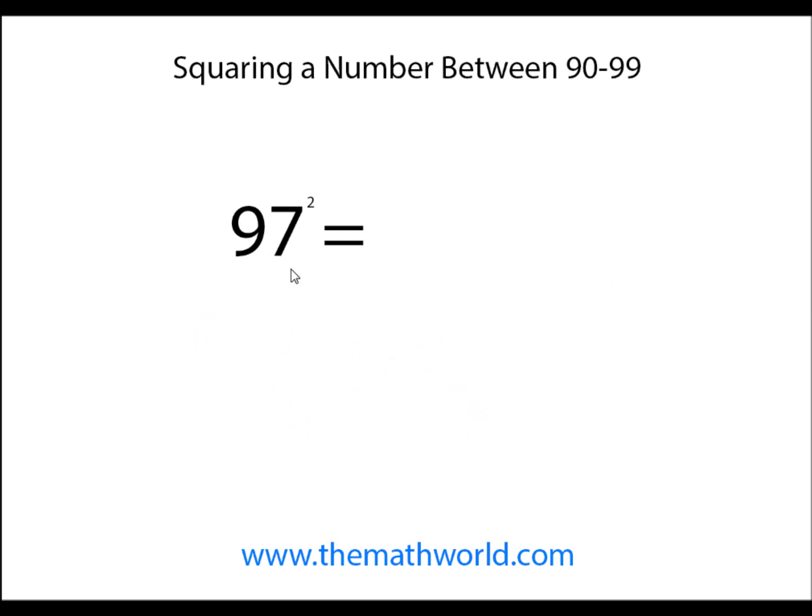The next example we're going to look at is 97 squared. 100 again minus 97 is 3. We're going to take 3 squared. 3 times 3 is 9. It's important to note that this does need to be 2 digits, so before we had 2 digits, but 9 we're going to write as 09.